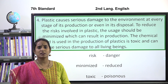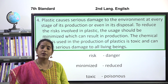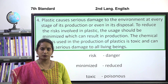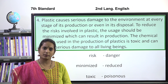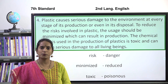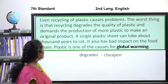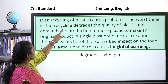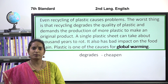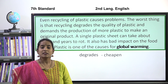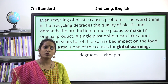Next word: toxic, meaning poisonous. Many chemicals are used in making plastic and these chemicals are very poisonous — toxic. When plastic is manufactured, many chemicals are used and they are very harmful to living beings, plants, and our environment. Next word: degrades, meaning cheapen. In the lesson, the sentence is 'recycling degrades the quality of plastic' — meaning recycling will cheapen or reduce the quality of plastic.